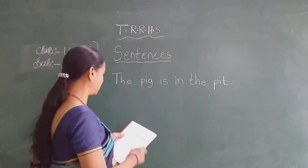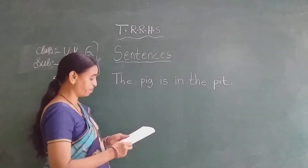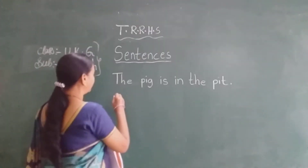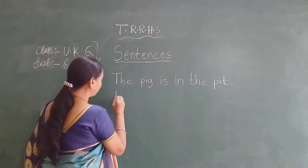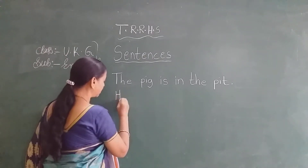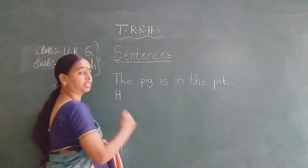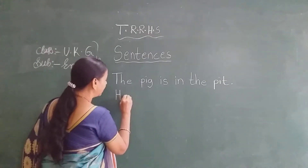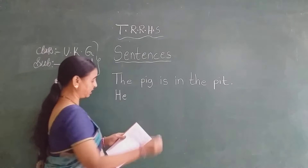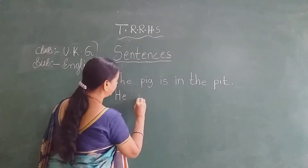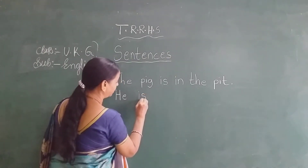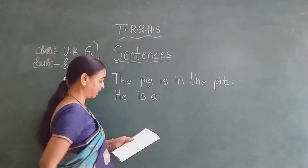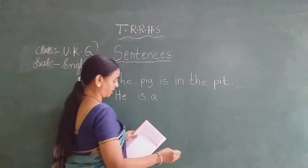Now next sentence: He is a big fat dog. He. H. H is the capital letter. First letter is capital letter. H-E. He. I-S. Is. Big fat dog.